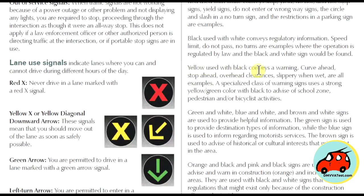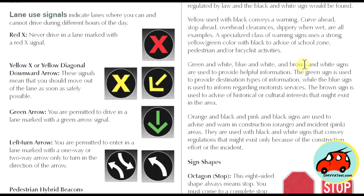Yellow used with black conveys a warning — examples include curve ahead, stop ahead, overhead clearances, and slippery when wet. A specialized class of warning signs uses a strong yellow-green color with black to advise of school zones, pedestrian, or bicyclist activities. Green and white, blue and white, and brown and white signs provide helpful information: green for destinations, blue for motorist services, and brown for historical or cultural interests in the area.